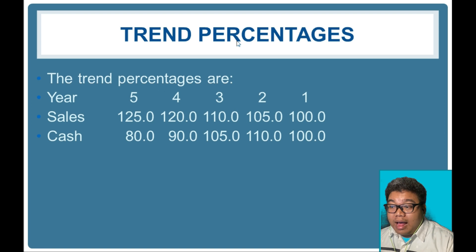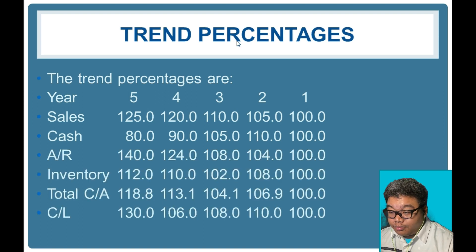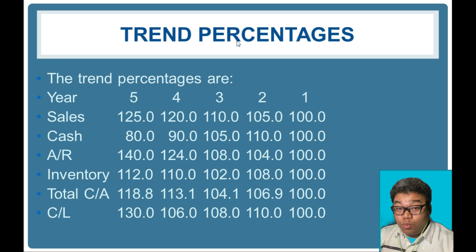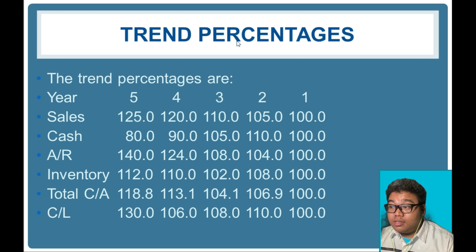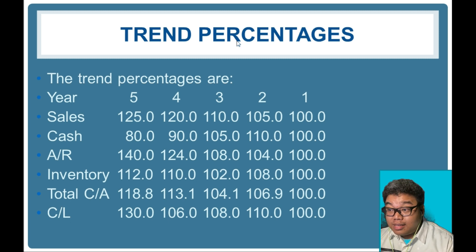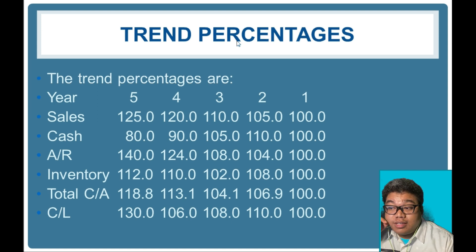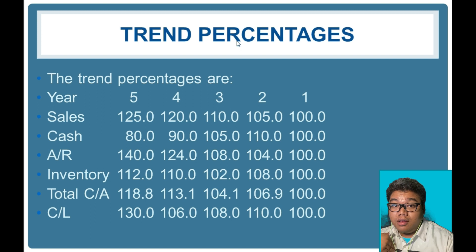Here we have pre-computed trend percentages. Year one was used as the base year, so all amounts in year one are turned into 100 percent. What we notice for sales is a consistent increase, which is consistent with the increase in accounts receivable — because if sales increase, the accounts we are yet to receive are increasing as well, which is normal.